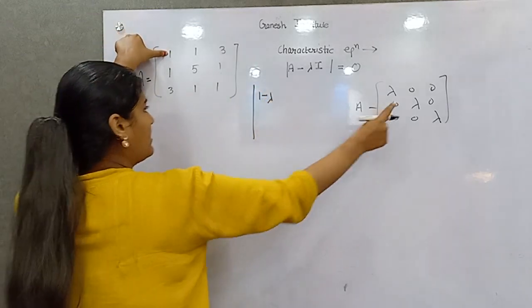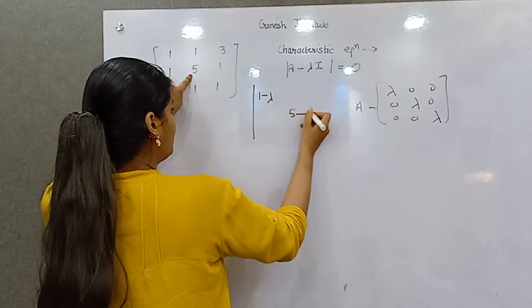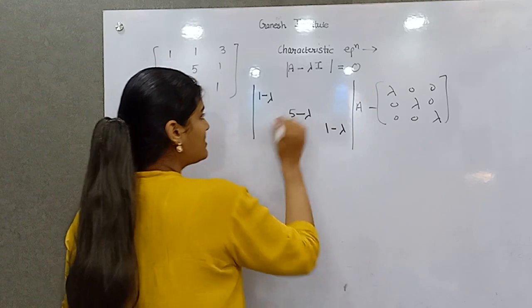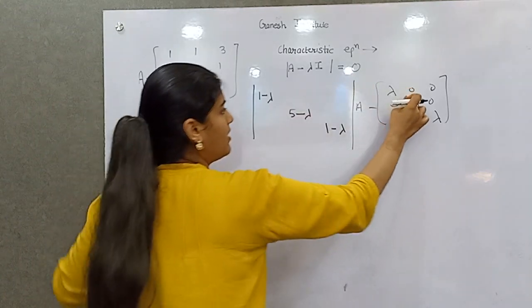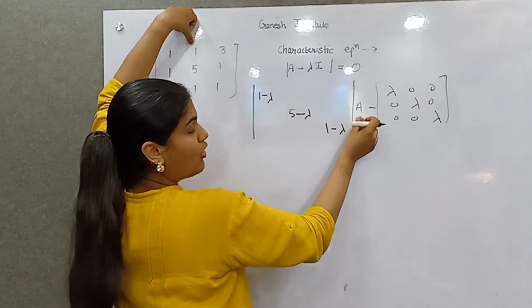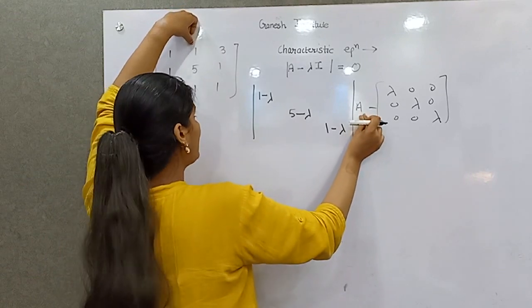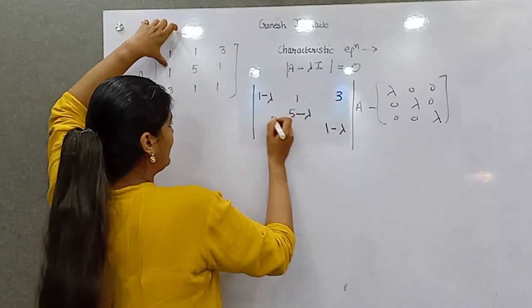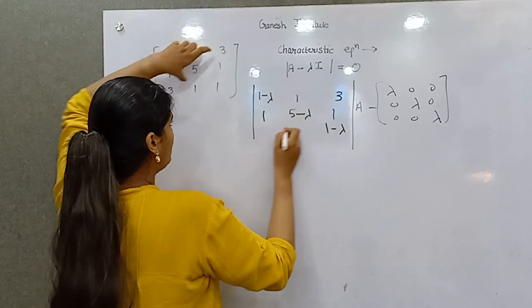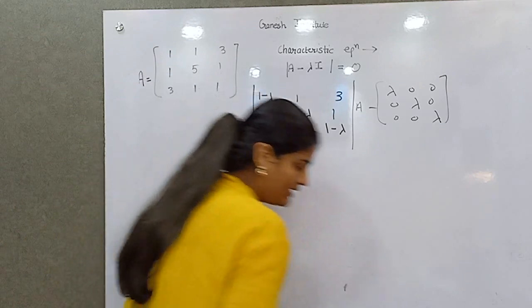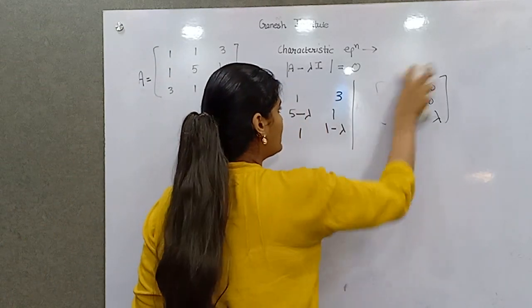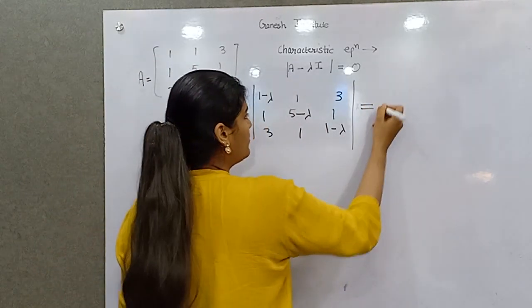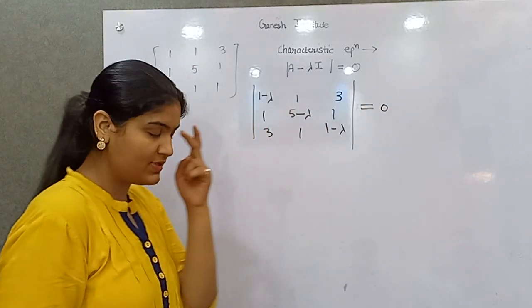Rest all will be the same because rest all should be from A. 1 minus 0 is 1, 3 minus 0 is 3, 1 minus 0 is 1. Let's erase this part. Now it should be 0.